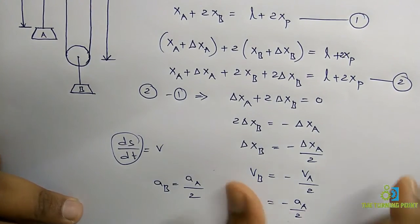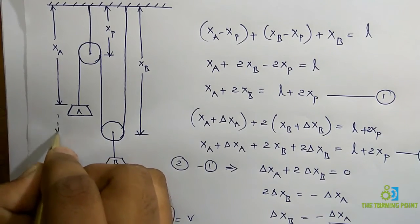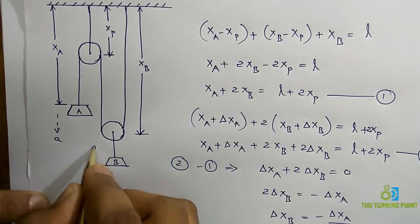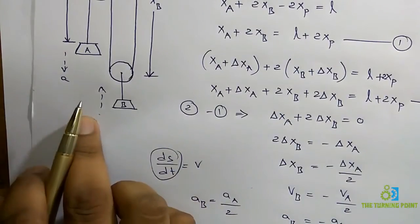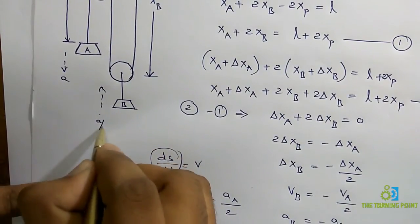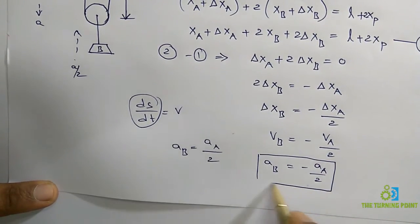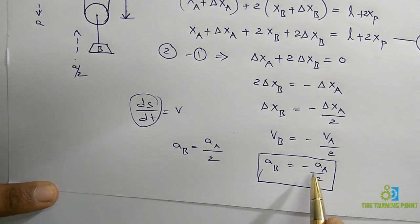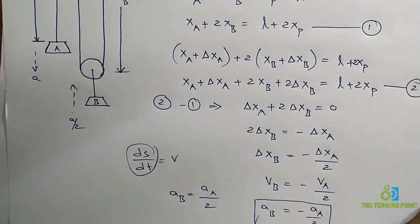The negative sign indicates that if block A has acceleration in the downward direction, then block B will have acceleration in the opposite direction — that is, upward. So the acceleration of block B is equal to the acceleration of block A divided by 2, and the negative sign signifies they accelerate in opposite directions.